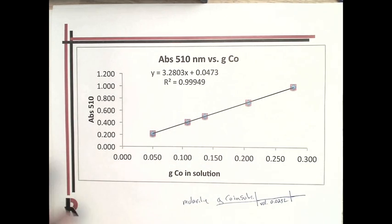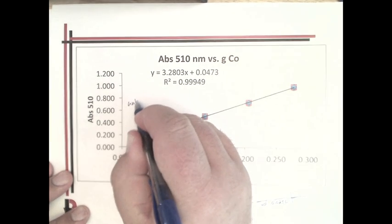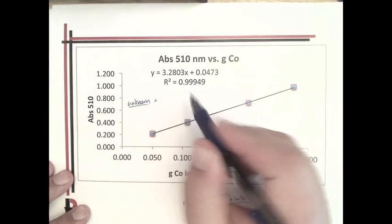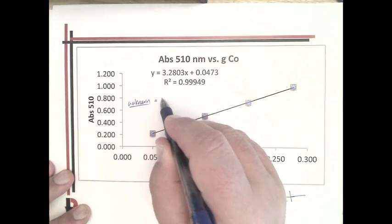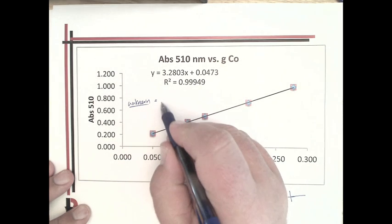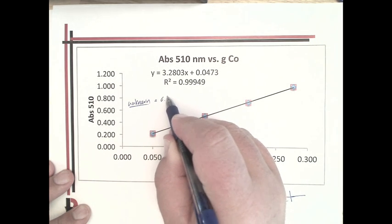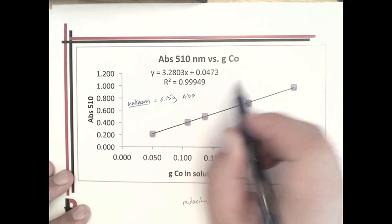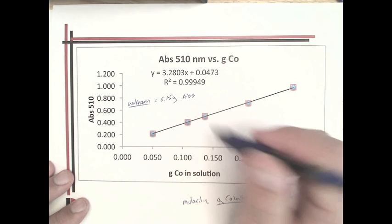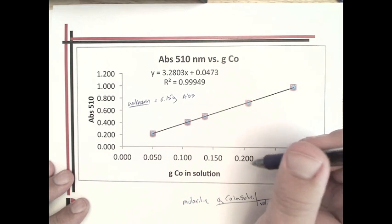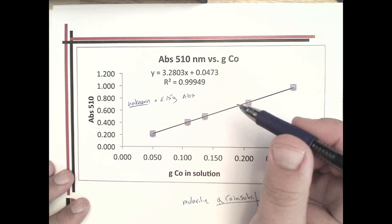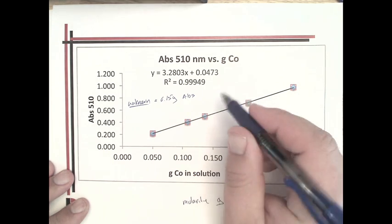Then, if you have an unknown—I'm just picking a number here, so this isn't actually the right answer—but let's say it has an absorbance of 0.15 grams with an absorbance of something like 0.3.